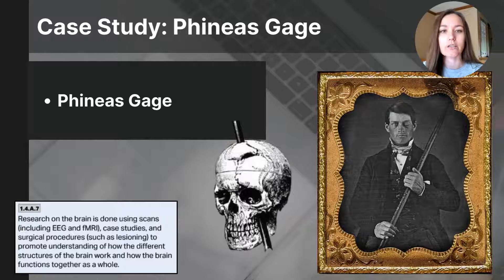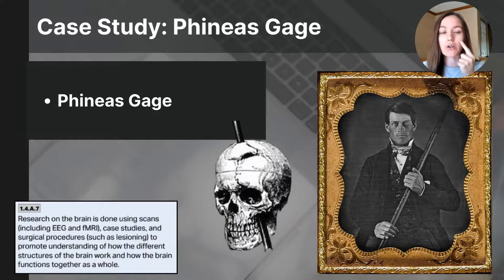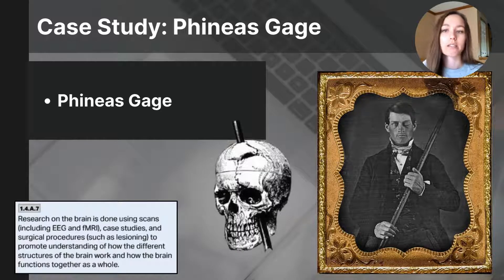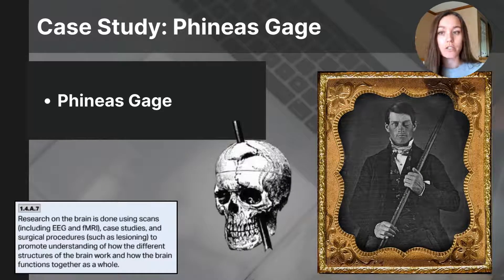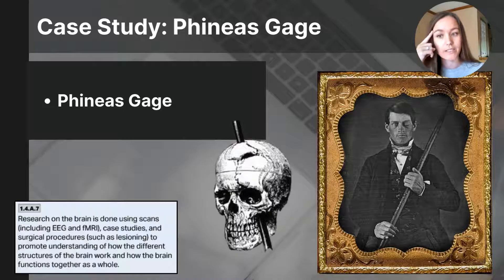Phineas was a railroad worker who survived a traumatic brain injury while working on the railroad. Accidentally, a tamping iron — you can see he's holding that iron rod — went through his cheek and out the top of his head, damaging the front portion of his brain, his frontal lobe. Before the accident, people described Phineas as responsible, reliable, and polite. After his brain injury, his personality dramatically changed and he became impulsive and rude. This case study was pivotal in understanding the brain's role in personality and behavioral impulse control. Gage's injury demonstrated that specific regions of the brain regulate behavior and personality, and provided early evidence that the frontal lobe is essential for executive functions like decision making, social conduct, and emotional control.